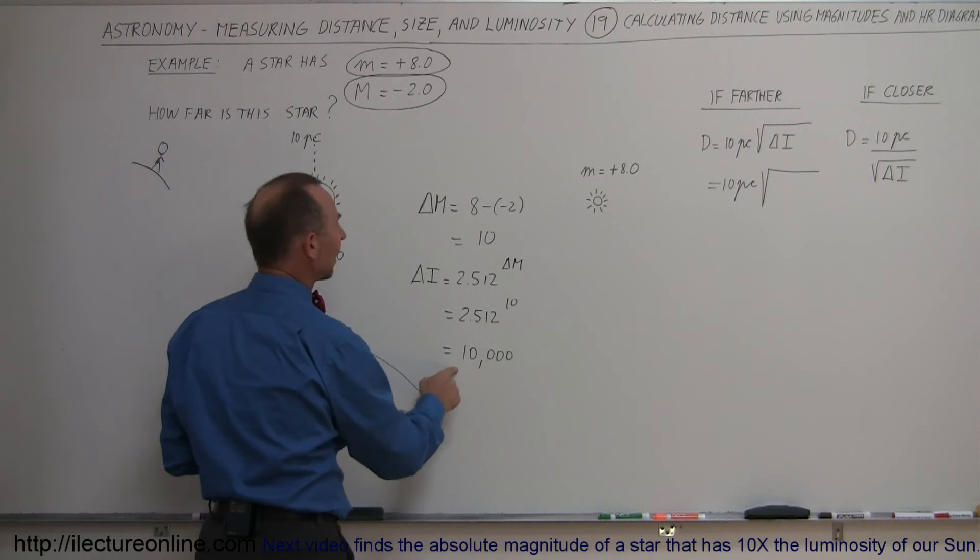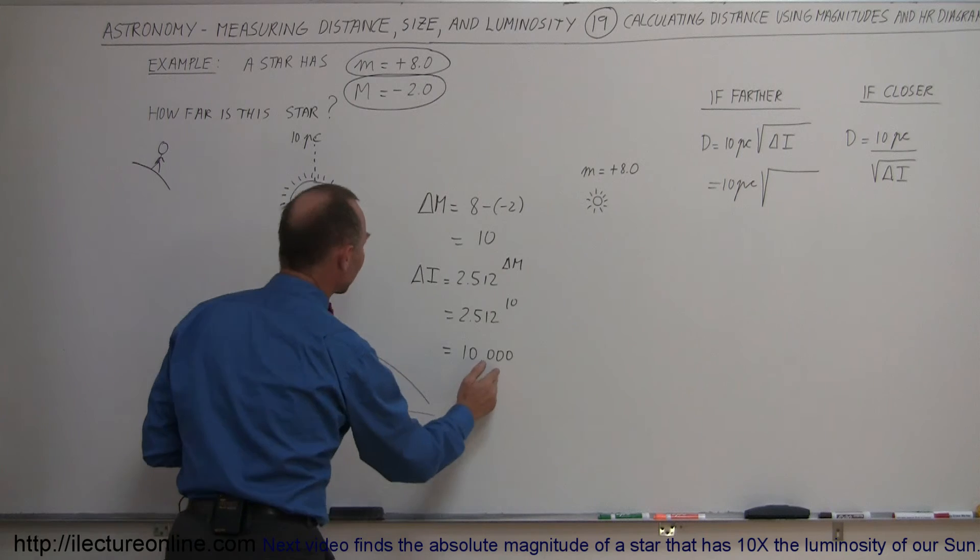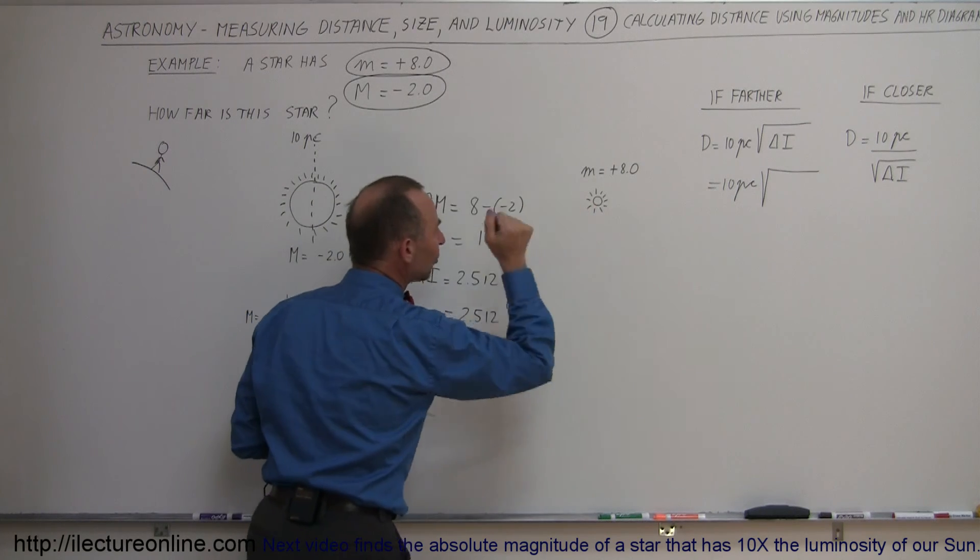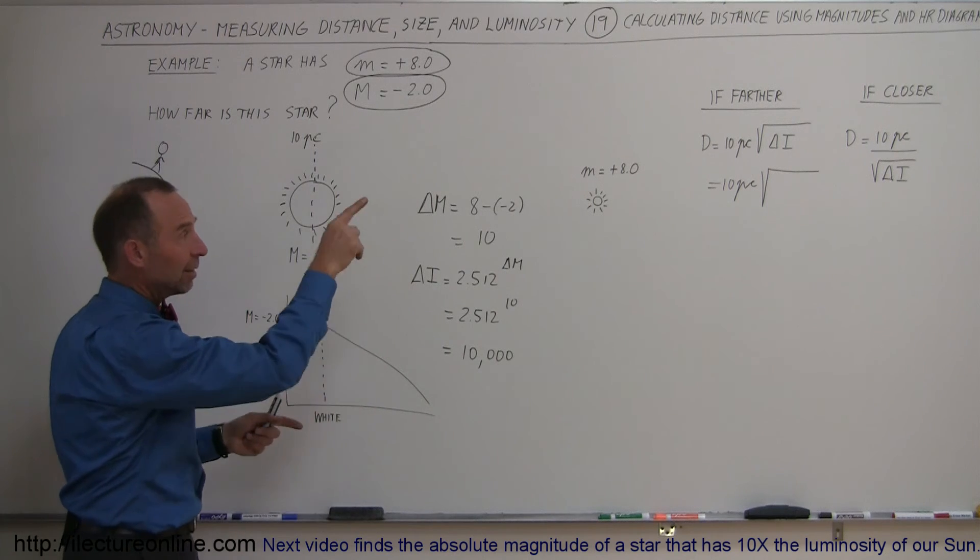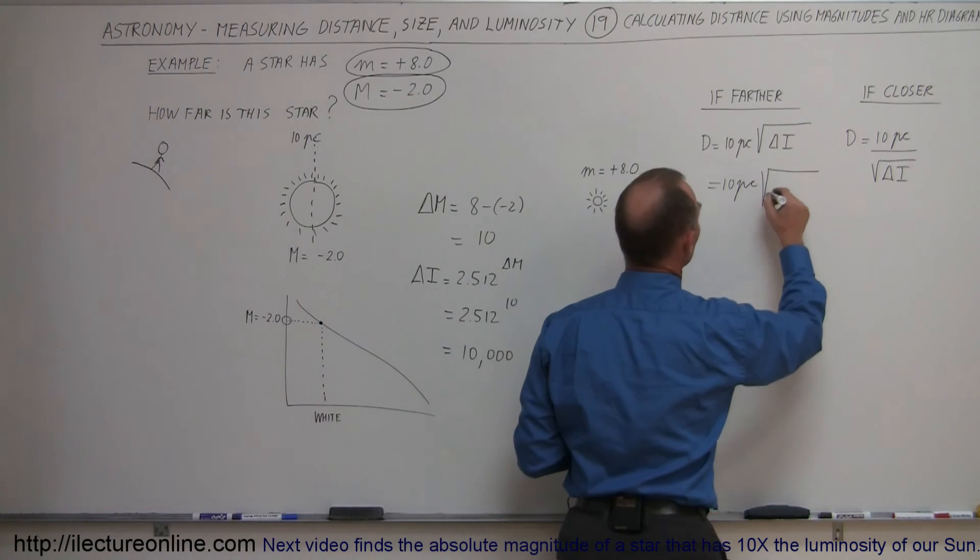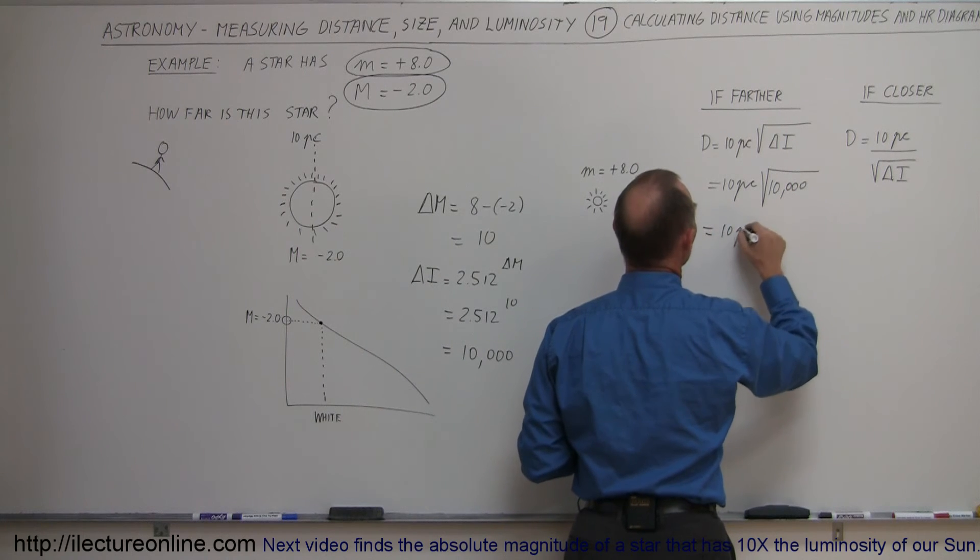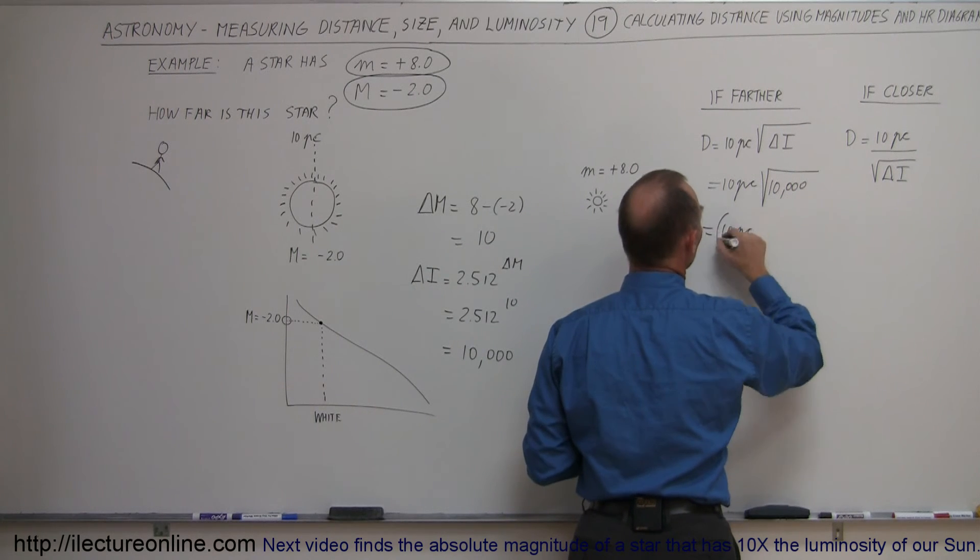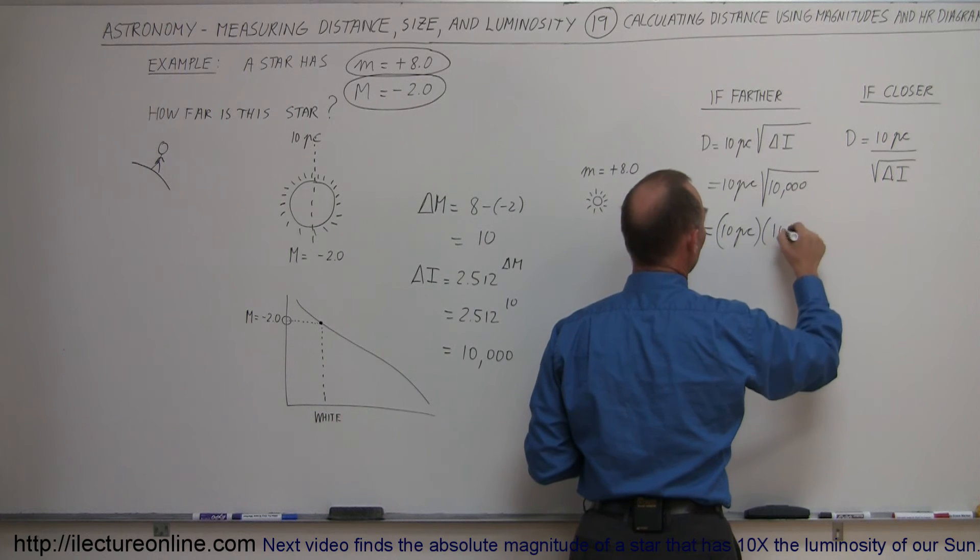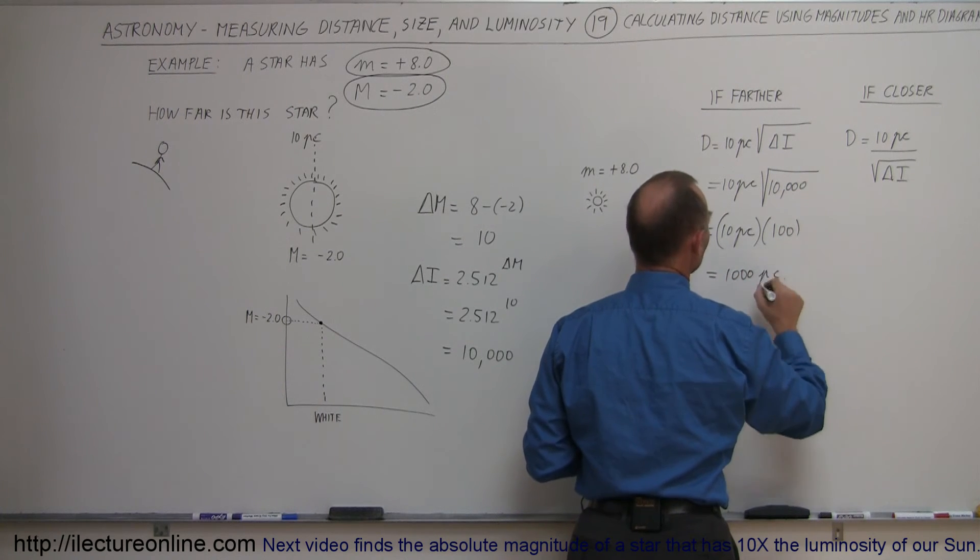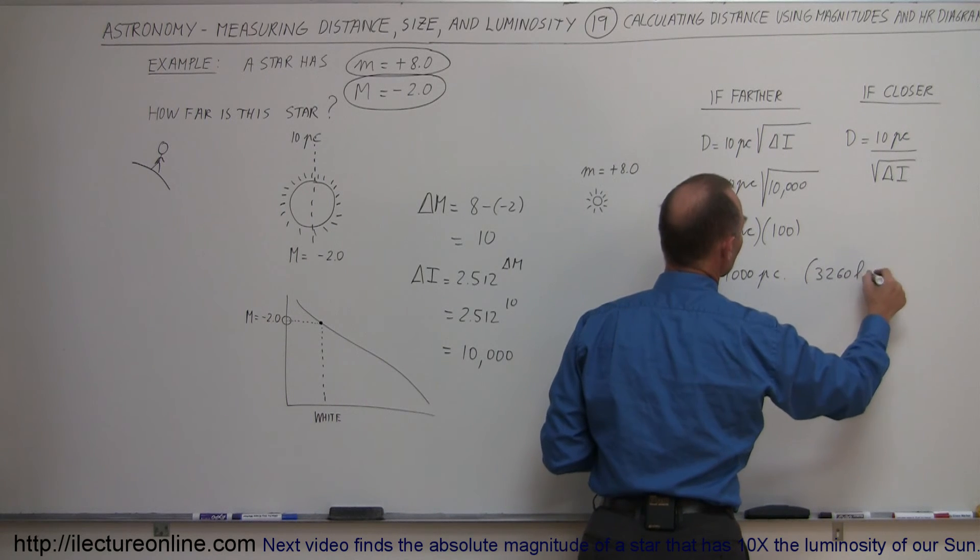So that means that the star is 10,000 times brighter if it was here at 10 parsecs than when it is where it actually is at. And so we take that number, the difference in intensity, plug it into the radical here. So we have 10,000, which means this is equal to 10 parsecs times 100, because the square root of 10,000 is 100, which is 1,000 parsecs, which of course is 3,260 light years.